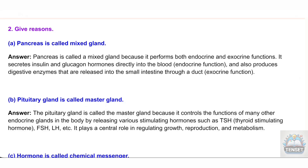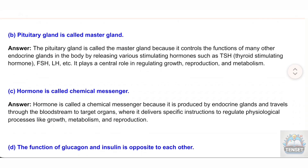B) Pituitary gland is called the master gland. Answer: The pituitary gland is called the master gland because it controls the functions of many other endocrine glands in the body by releasing various stimulating hormones such as TSH (Thyroid Stimulating Hormone), FSH, LH, etc. It plays a central role in regulating growth, reproduction, and metabolism.